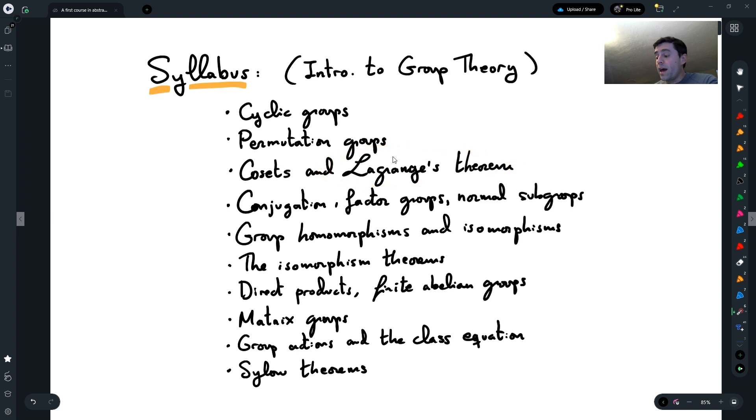Then we're going to move on and talk about cosets so we can prove a very important theorem called Lagrange's theorem. Out of Lagrange's theorem, we will also prove Fermat's little theorem, Euler's theorem, and then introduce some of the first applications to cryptography. Then we're going to talk about conjugates and factor groups and normal subgroups, and then maps between groups, group homomorphisms and group isomorphisms.